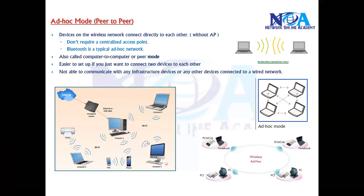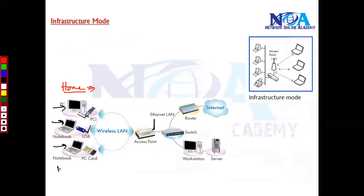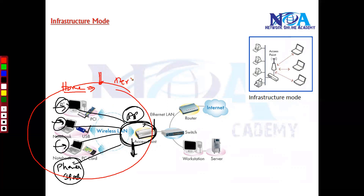Infrastructure mode is the one we commonly use, including in home networks. In a home network you have an access point, and you connect laptops, notebooks, smartphones, or iPads to one single centralized access point. You configure the access point once, and every time you come home or to the office your device automatically detects and connects to that network.